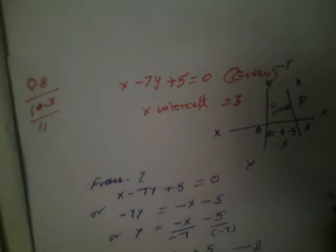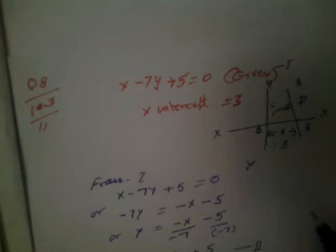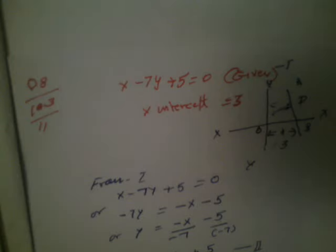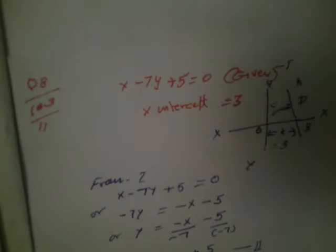So from equation 2, if we find the slope of AB — because from the given equation we can find it in the form of y is equal to mx plus c — then we can find out the slope of the perpendicular also by using m1 into m2 is equal to minus 1. And because this equation is making an intercept on the x-axis, using that we can compute the equation of line CD which is perpendicular to AB.